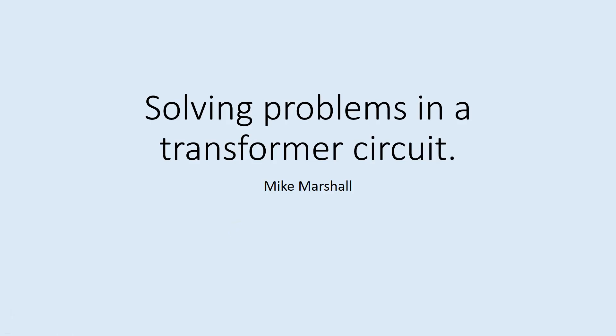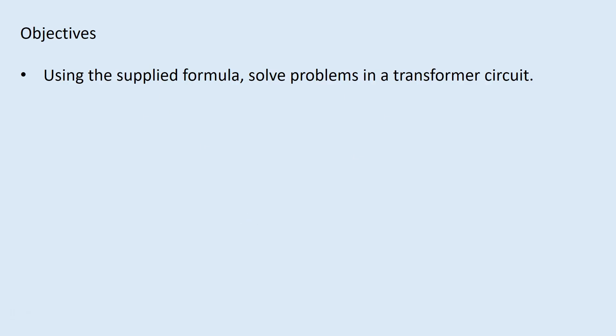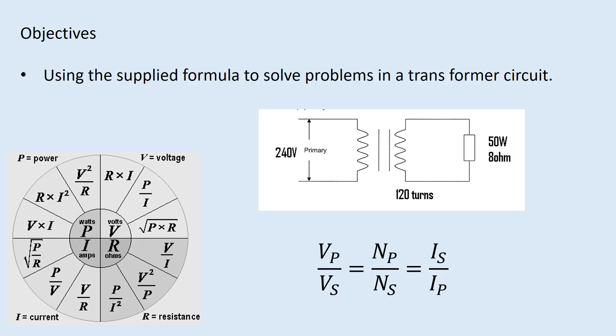I've put this presentation together for solving problems in a transformer circuit. It's not about fixing or maintaining a transformer - it's more about calculating the relationship between what's going on on the primary windings and what's happening on the secondary windings. It's a relationship between the primary circuit and the secondary circuit. The objective of this presentation is using the supplied formula to solve problems in the transformer circuit.